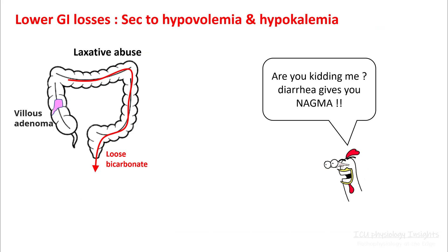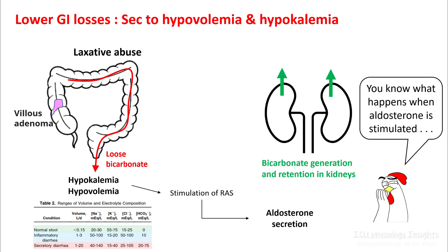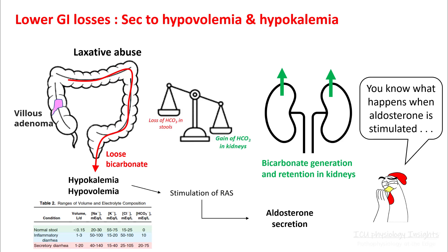Lower GI losses can sometimes lead to metabolic alkalosis as well. You actually lose bicarb in your stool, so this usually gives non-anion gap metabolic acidosis. However, you can also lose potassium in your stool and become severely hypovolemic. When this happens, you stimulate your renin-angiotensin system, resulting in aldosterone secretion, which stimulates bicarb generation and retention in the kidneys. The acid-base disturbance in lower GI losses depends upon the amount of bicarb lost in stools versus gained in kidneys, and this depends on degree of hypovolemia. Patients with laxative abuse and villous adenoma who lose a lot of volume through stool can actually have metabolic alkalosis.